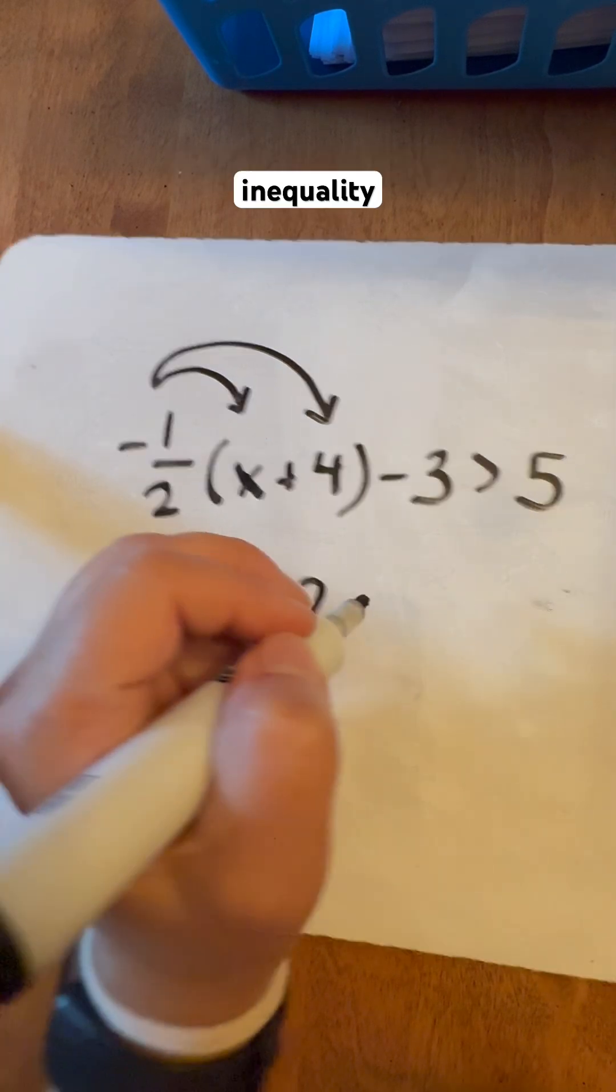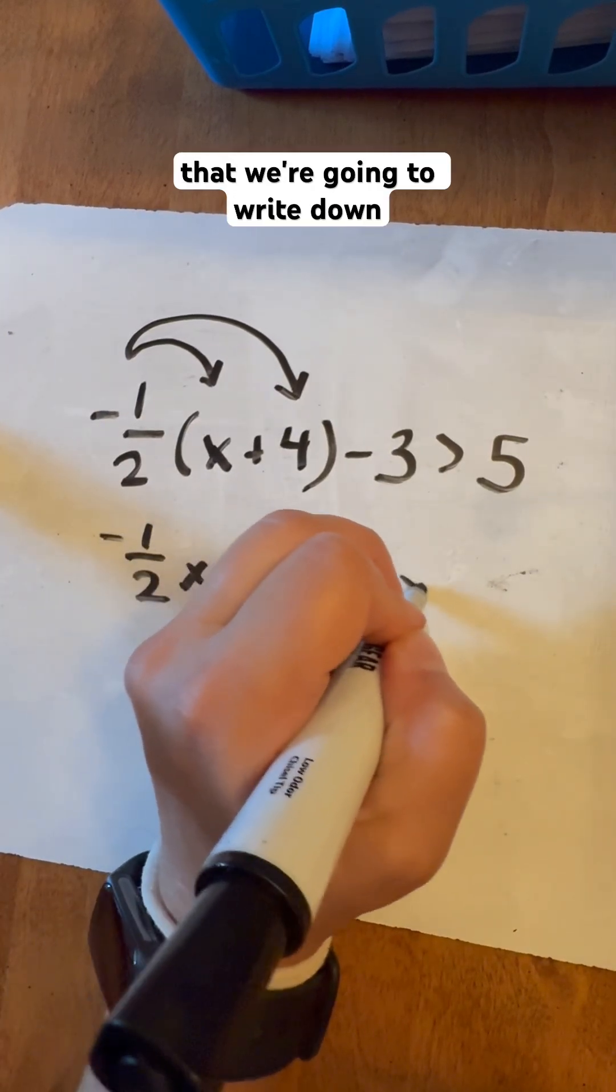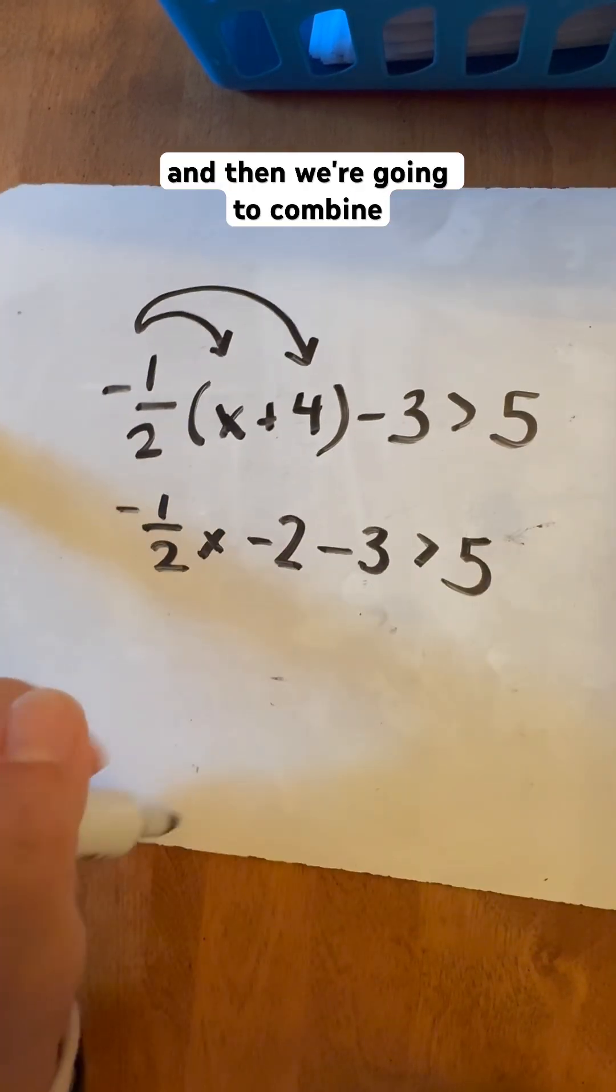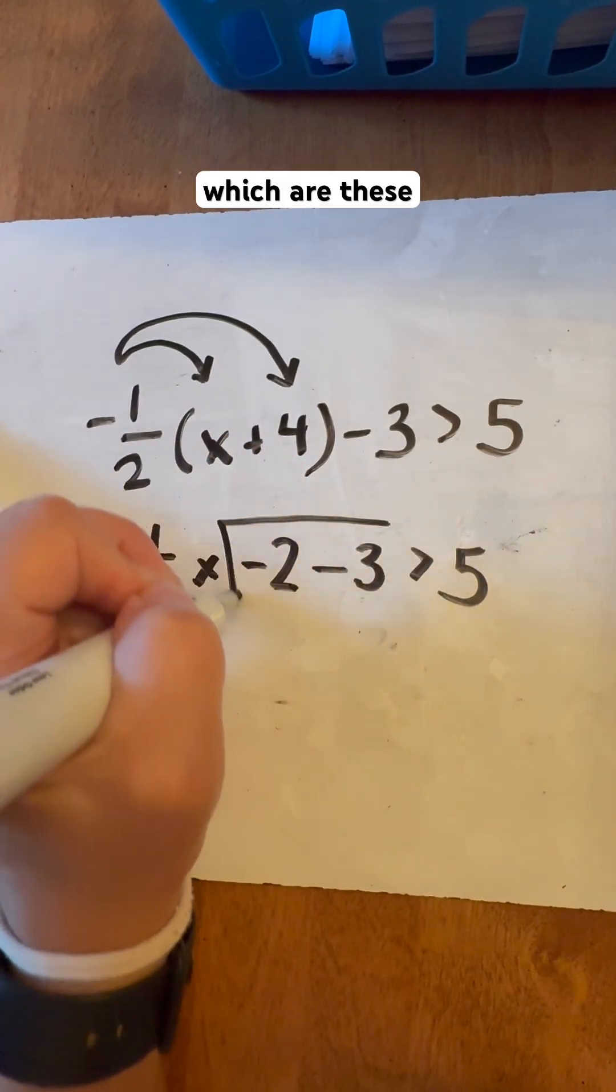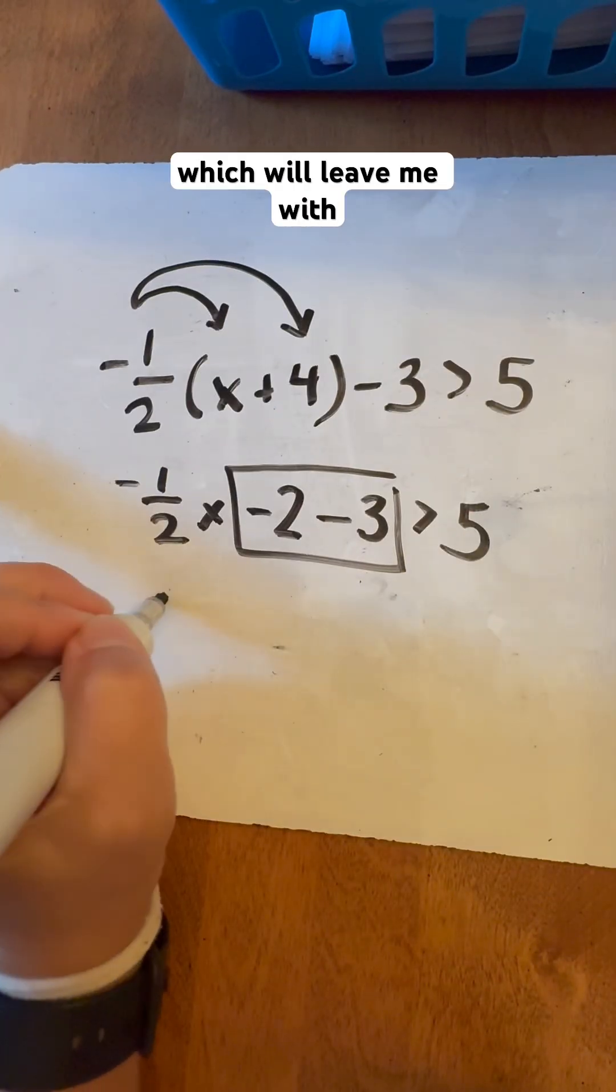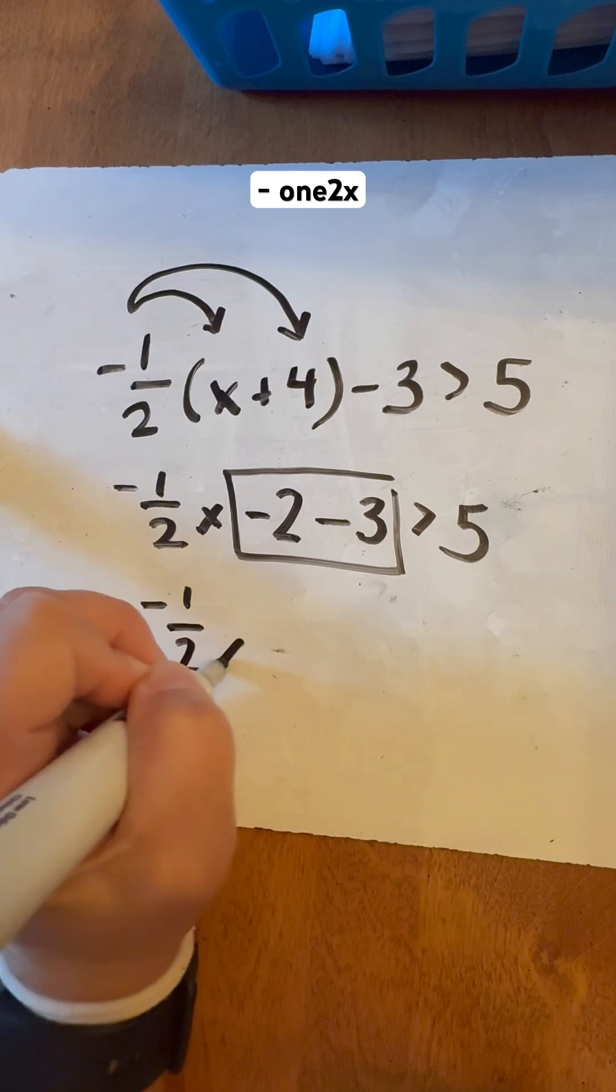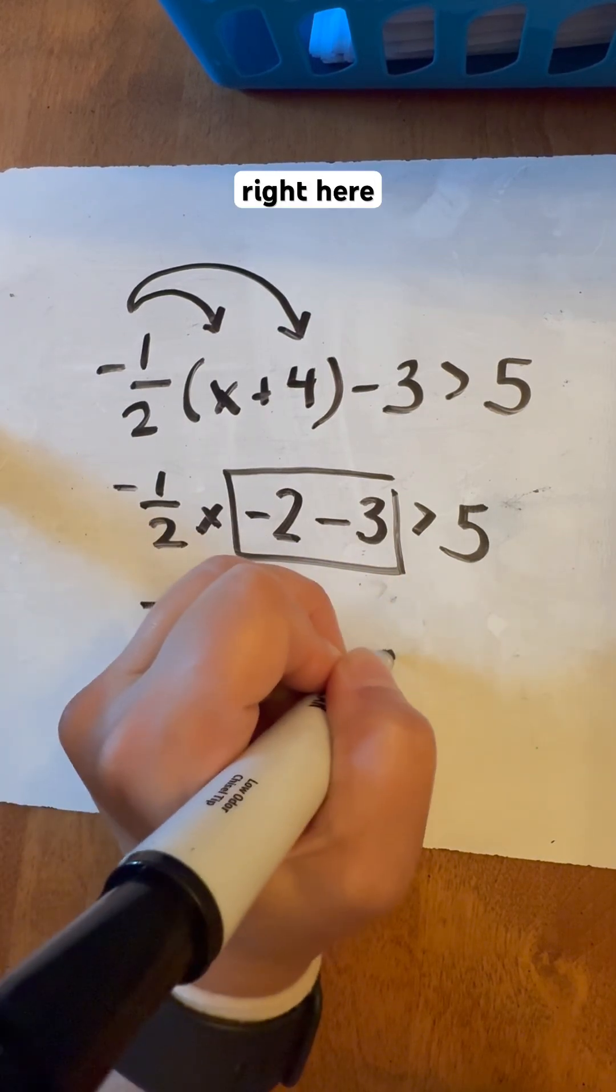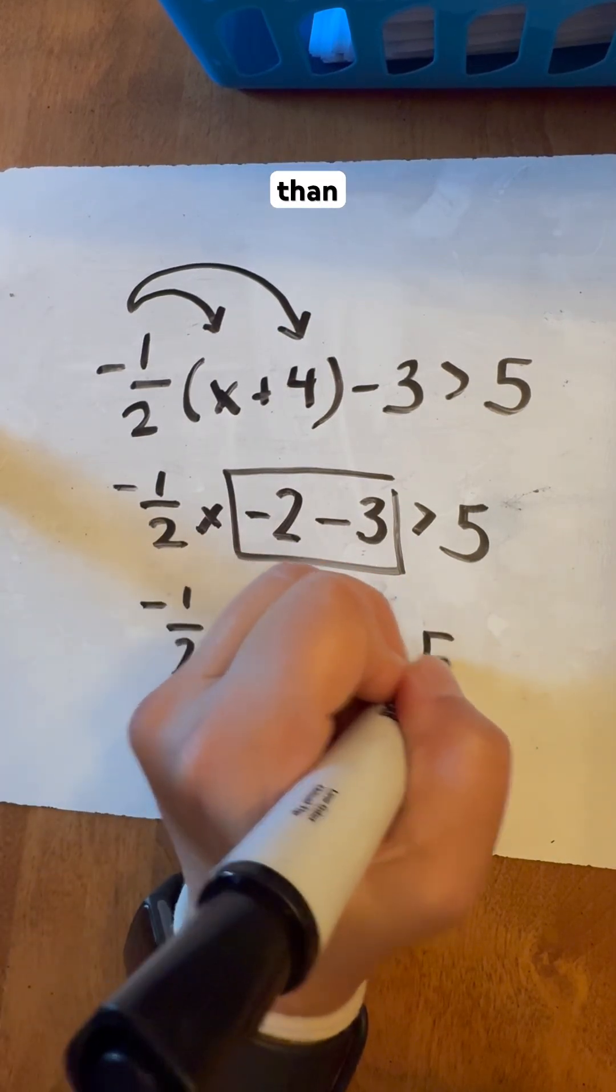Now you have the rest of this inequality statement that we're going to write down here. And then we're going to combine like our like terms, which are these two right here, which will leave me with negative one half x. And then that's going to be negative five right here. And then this is going to be greater than five.